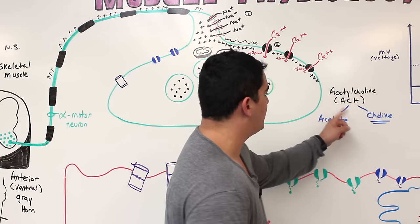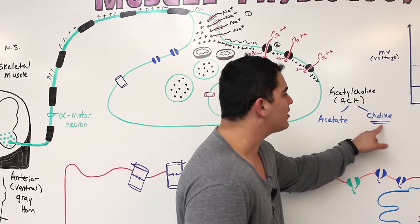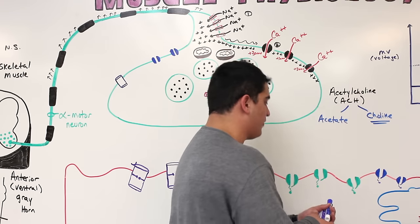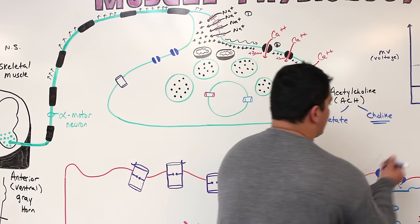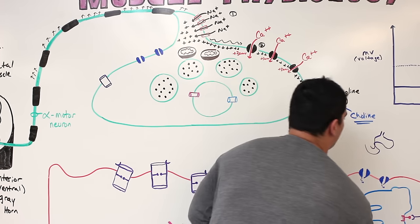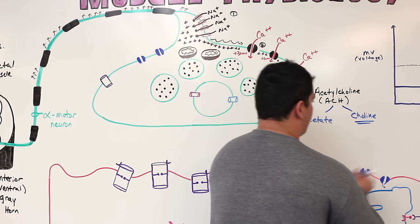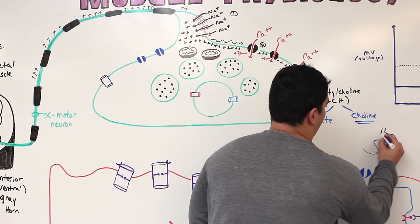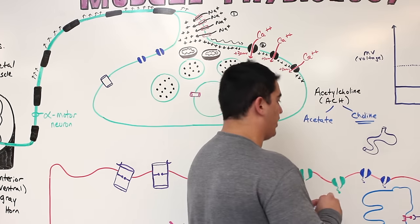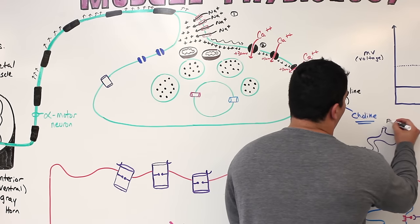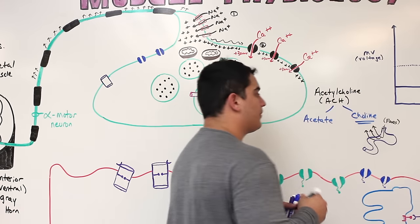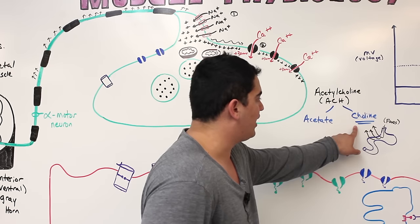Where does choline come from? It's not just present in the body on its own — it comes from various dietary sources. You eat certain foods and vegetables that contain choline; it is absorbed across the gastrointestinal tract and into the blood. So choline is an essential vitamin-like nutrient coming from the diet via the GI tract.